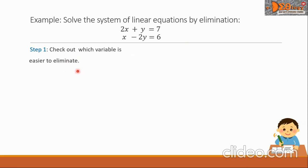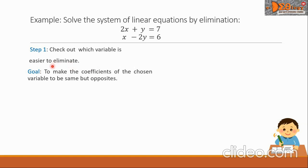Step 1: Check which variable is easier to eliminate. We have the variable X for the two equations and the variable Y for the two equations. Our goal is to make the coefficients of the chosen variable the same but with opposite signs.